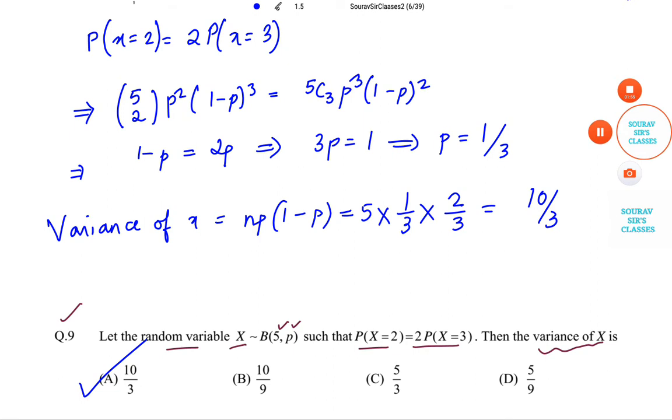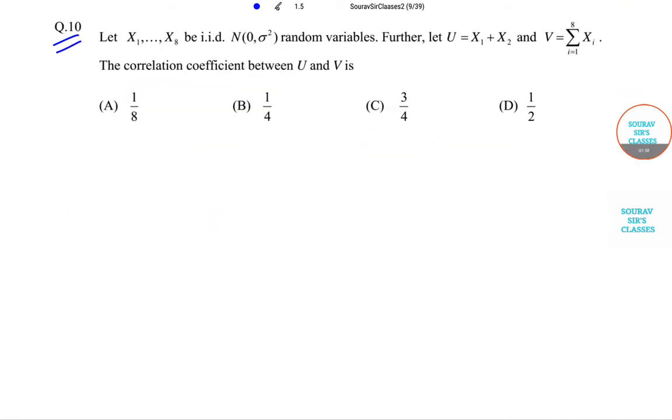The next question is Question 10. X₁, X₂, ..., X₈ are identically independently distributed following a normal distribution with mean and variance given. Now let U = X₁ + X₂ and V is given as the summation of Xᵢ. We need to find the correlation coefficient between U and V.